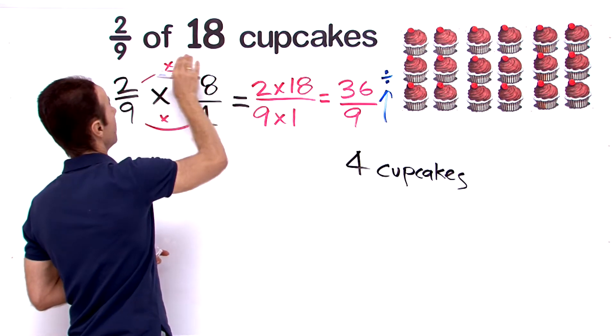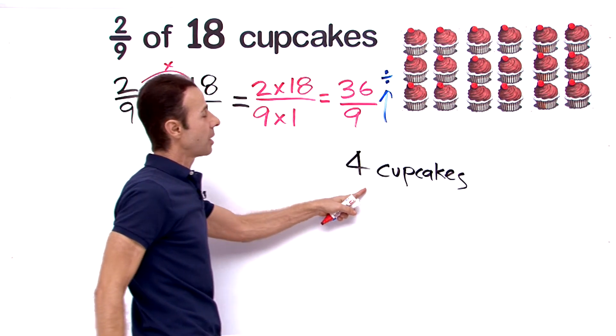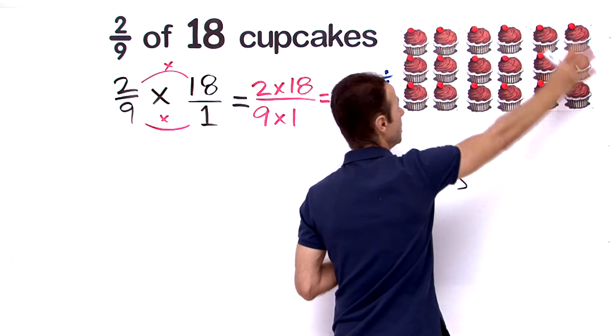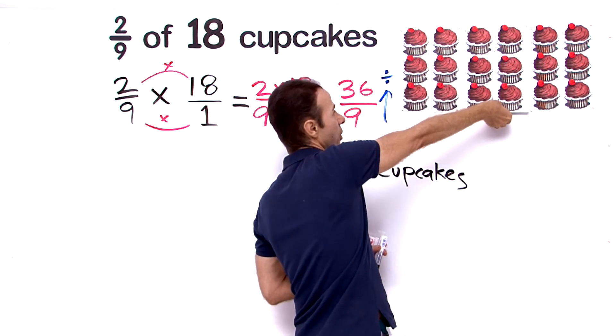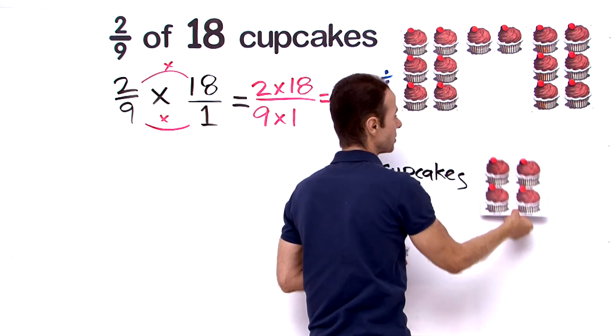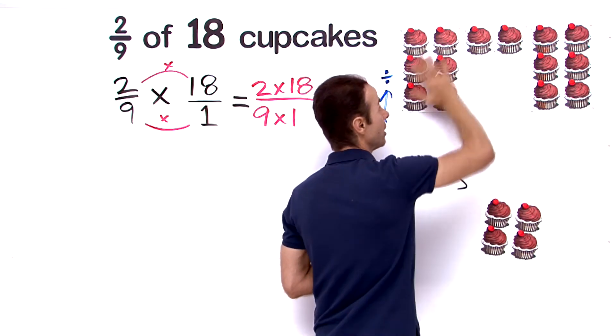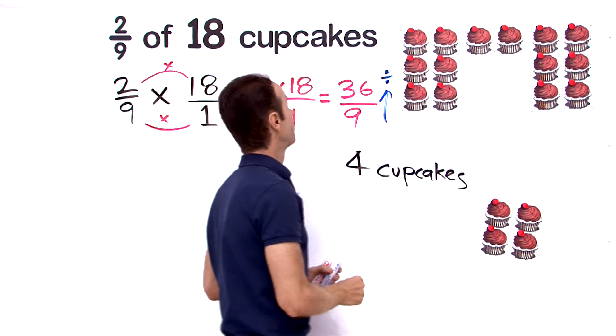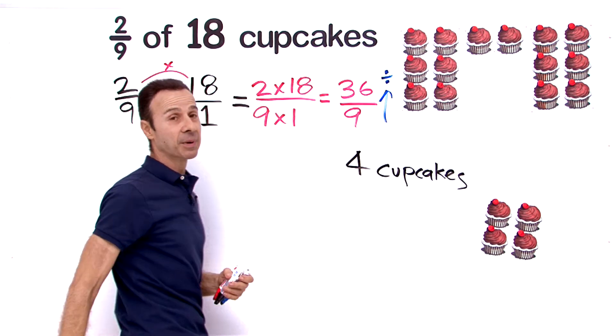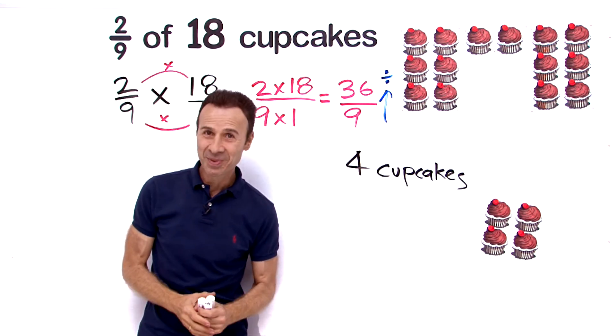2/9 of 18 cupcakes is 4 cupcakes. So we have 18, we want to find 2/9 of that, and all we do is take out 4 cupcakes. There it is—that's 2/9 of a total of 18 cupcakes. There you go, hope that helps.